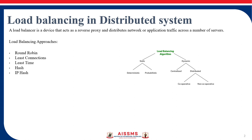Then we have weighted round robin, which allows an administrator to assign different weights to each server, determining how much traffic each server receives. Servers deemed able to handle more traffic will receive a larger share, and this weighting can be configured with DNS records. Next is IP hash, which combines the incoming traffic source and destination IP addresses and uses a mathematical function to convert it into a hash. Based on that hash, the connection is assigned to a specific server.